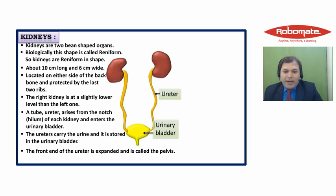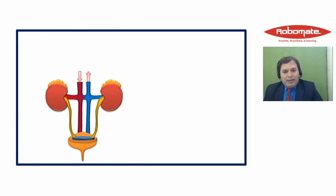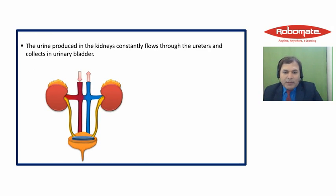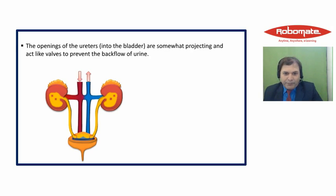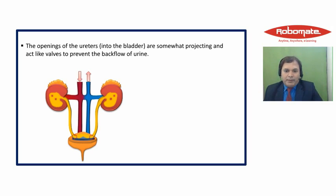The front end of the ureter is expanded and is called the pelvis. The urine produced in the kidneys constantly flows through the ureters and collects in the urinary bladder. The openings of the ureters into the bladder are somewhat projecting, and therefore they act like valves to prevent the backflow of urine — once urine enters the urinary bladder, it cannot flow back into the ureter.